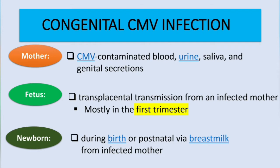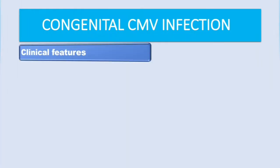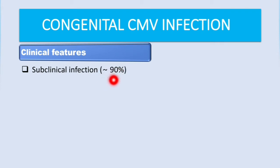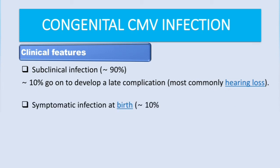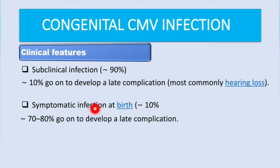Looking at clinical features, about 90% of cases are subclinical — they don't show any symptoms. Of this 90% which is asymptomatic, 10% go on to develop late complications. Of those symptomatic cases, about 70 to 80% go on to develop a late complication, and we are going to talk about those complications.